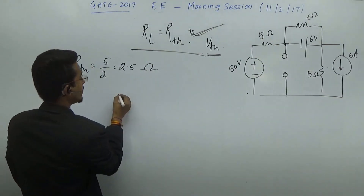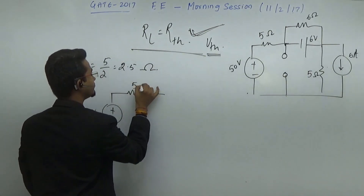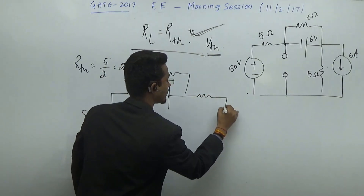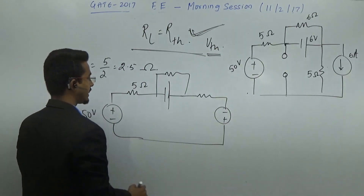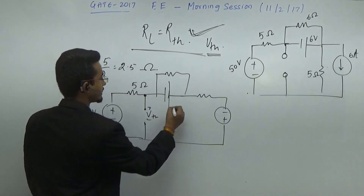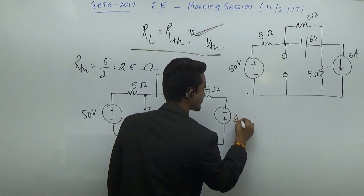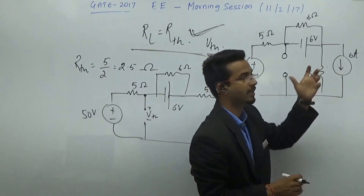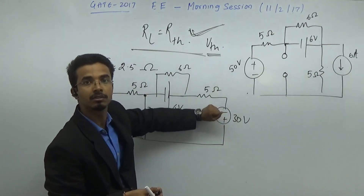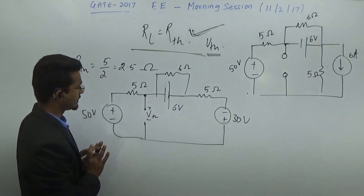My circuit will look like this: it is 50 volts, this is 5 ohm. You will get something like this, and you have to calculate the potential across this terminal — what should be the value of VTH? Here, this is 6 ampere, 6 ohm, and it is 5 ohm. It is 6 into 5, that means 30 volts. This practical current source — one current source with parallel resistance — has been converted into a practical voltage source: 30 volts in series with 5 ohm.